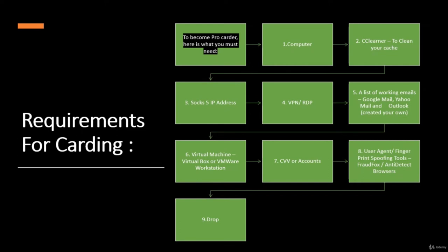Second, you need CCleaner to clear your cache — very important, covered in upcoming videos. Third, you need SOCKS by IP address so you won't get caught. Fourth, use VPN or RDP — you can use both. Fifth, you need a list of working email addresses like Gmail, Yahoo, or Outlook, since temporary emails are easily detectable and websites will cancel orders made with them.